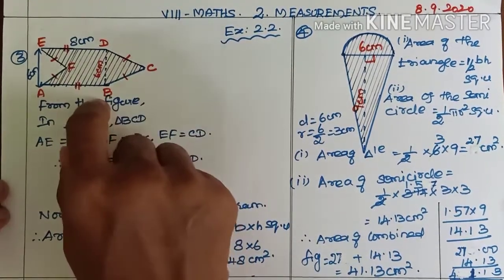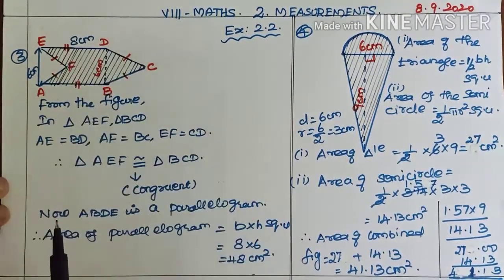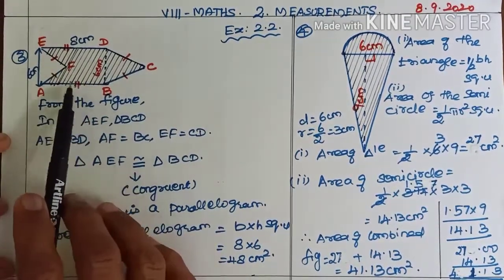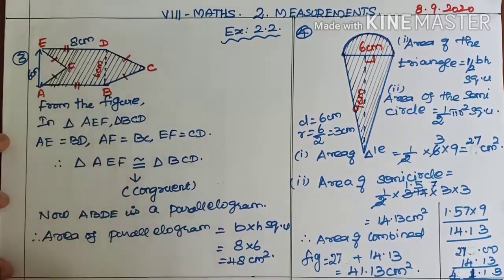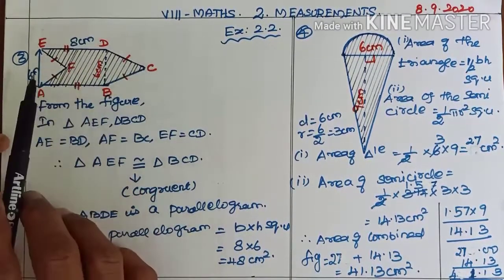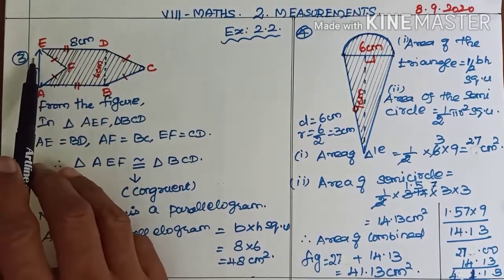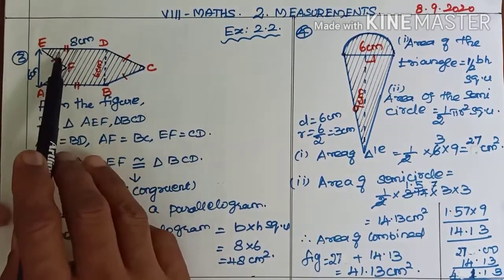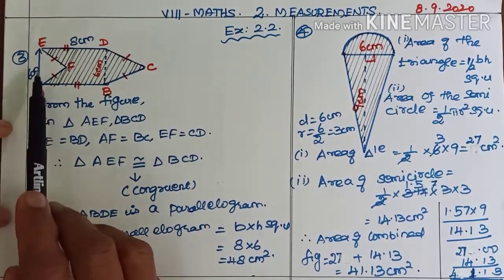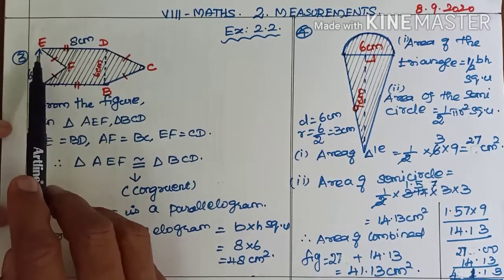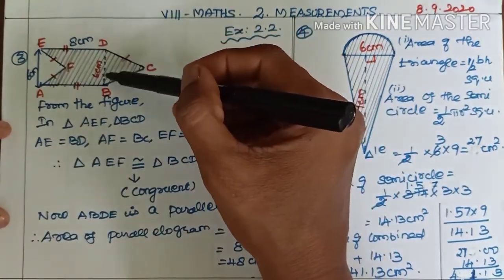The combined figure has height 6 cm and length 8 cm. Points A, B, C, D are labeled in the diagram. The area of the combined figure is 60 cm squared.